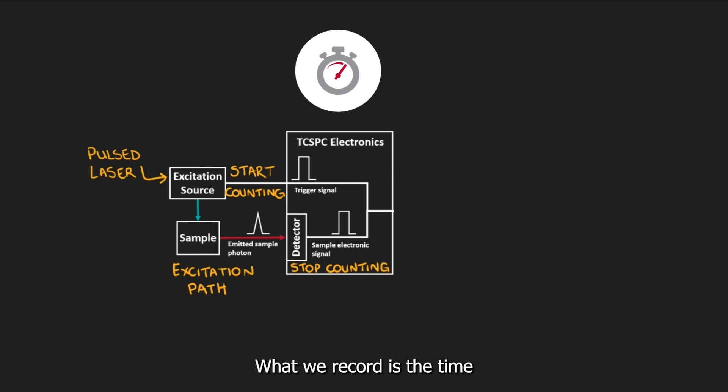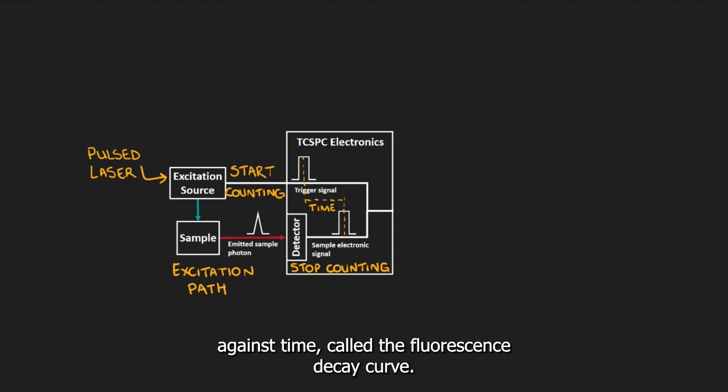What we record is the time between the trigger signal and the emitted photon. This time is logged in a histogram of counts against time, called the fluorescence decay curve.